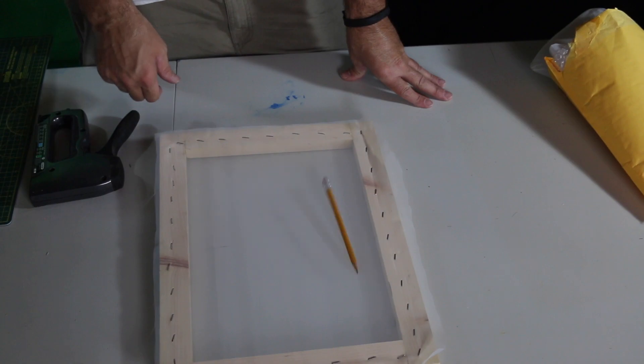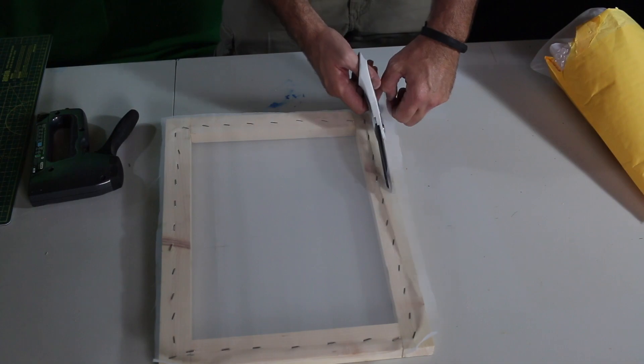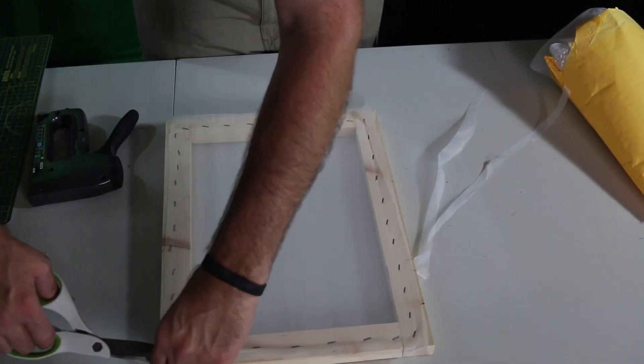Now you'll know if your screen is tight enough if you can drop a pen or pencil on it and it bounces up. And then I go along and I just trim up the sides to get all that excess screen out of the way.